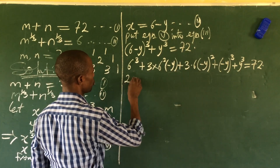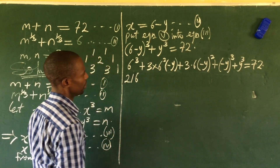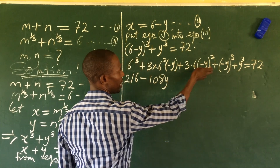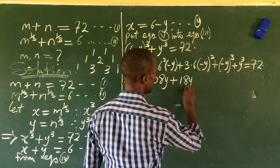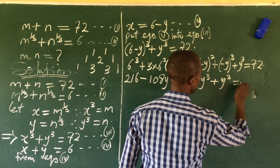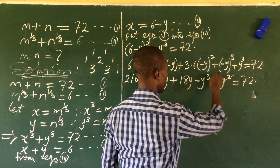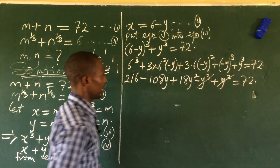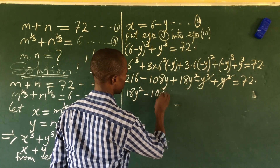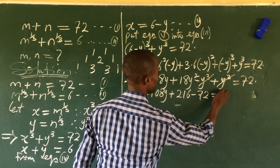Simplifying: 6³ = 216, 3×36 = 108 so we get −108y, then +18y², then −y³, plus y³ = 72. The −y³ and +y³ cancel. Rearranging gives 18y² − 108y + 216 − 72 = 0, which simplifies to 18y² − 108y + 144 = 0.